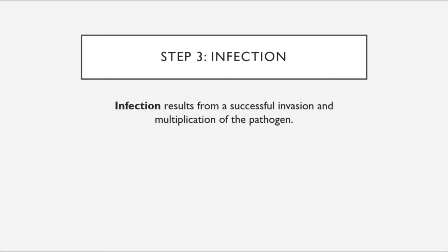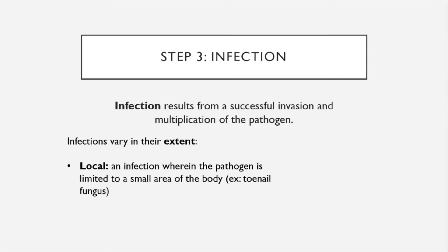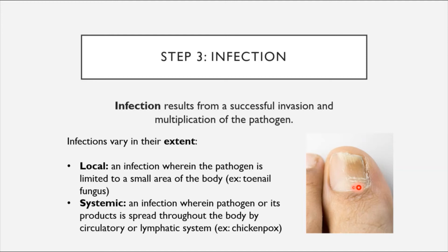After successful invasion, the disease is at the stage recognized as infection — resulting from successful invasion and replication of the pathogen. Infections can vary in extent. A local infection is one where the pathogen is limited to a small area of the body; toenail fungus is an example. A systemic infection is one where the pathogen or its products, such as toxins, are spread throughout the body by the circulatory or lymphatic system. Chickenpox is an example — it enters through the respiratory system and spreads throughout the body, causing the characteristic skin rash.